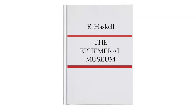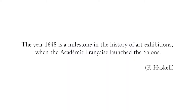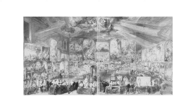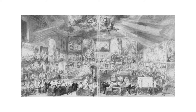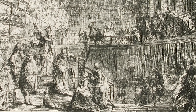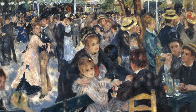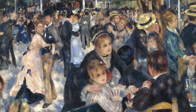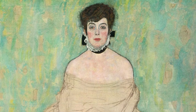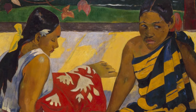In his book The Ephemeral Museum, Francis Haskell traces an overview of the history of art exhibitions in Europe. He identified as a milestone in the history of art exhibitions the year 1648, when the Académie Française launched the Salon. The Salon were places where French artworks were exposed to be judged by the public. It was in the 17th and 18th centuries that art started to be considered heritage of the people, and the state museums were born. Some of the important steps traced by Haskell are the Impressionist exhibitions from 1874 onwards, the German industrial secessions, and the post-Impressionist exhibitions in London at the beginning of the 20th century.